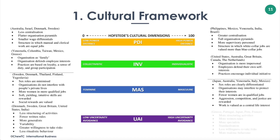Hofstede's uncertainty avoidance dimension measures the extent to which different cultures socialize their members into accepting ambiguous situations and tolerating uncertainty. Members of high uncertainty avoidance cultures place a premium on job security, career patterns, and retirement benefits. They also have a strong need for rules and regulation, and managers are expected to issue clear instructions while subordinates' initiatives are tightly controlled. Low uncertainty avoidance cultures are characterized by a greater readiness to take risks and less emotional resistance to change.